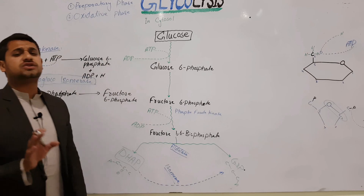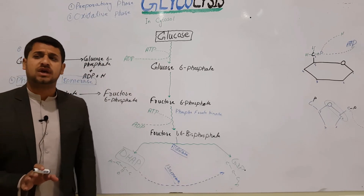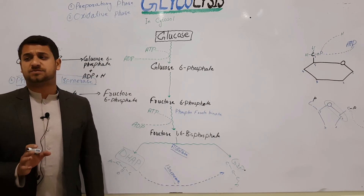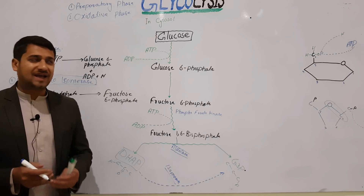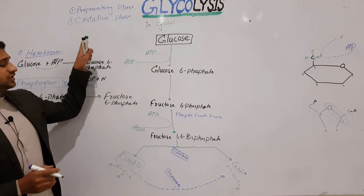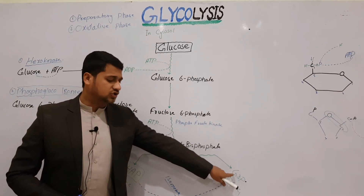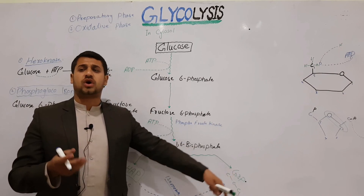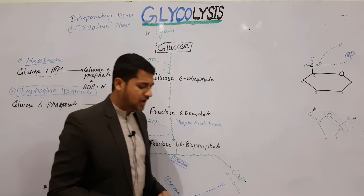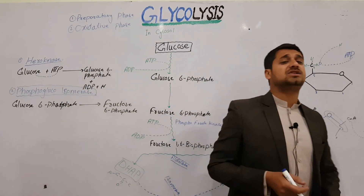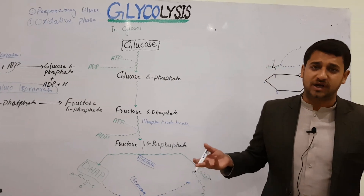Each step in glycolysis requires a specific enzyme. In the oxidative phase, the two G3P molecules will produce two pyruvic acid molecules and four ATPs will be generated.